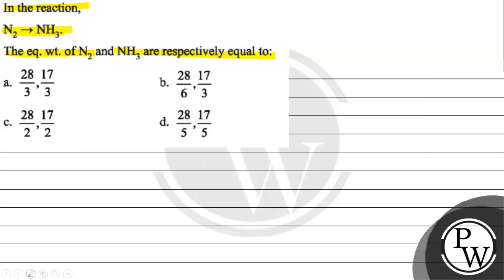Here we have options. Option A: 28 by 3, 17 by 3. Option B: 28 by 6, 17 by 3. Option C: 28 by 2 and 17 by 2. Option D: 28 by 5 and 17 by 5. The key concept for this question is equivalent weight.